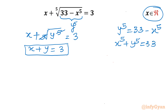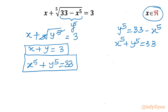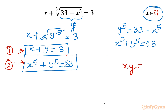So we have a new system of equations: x plus y equals 3, and x^5 plus y^5 equals 33. Now there are two ways possible — first method using Pascal's triangle and binomial expansion, and second method using algebraic identity and algebraic manipulations. Let us solve using the second method, with the substitution xy equals a.